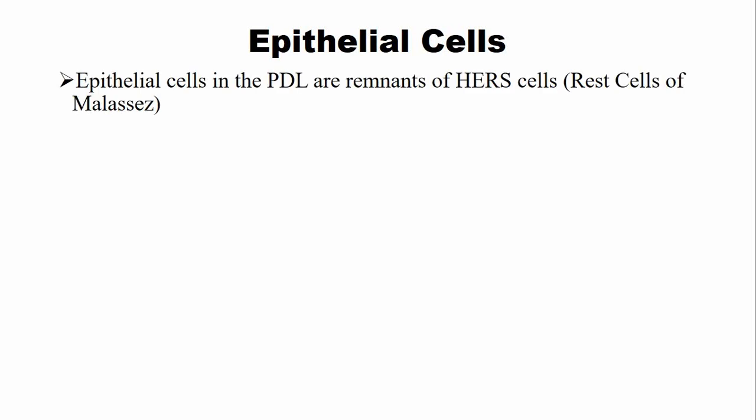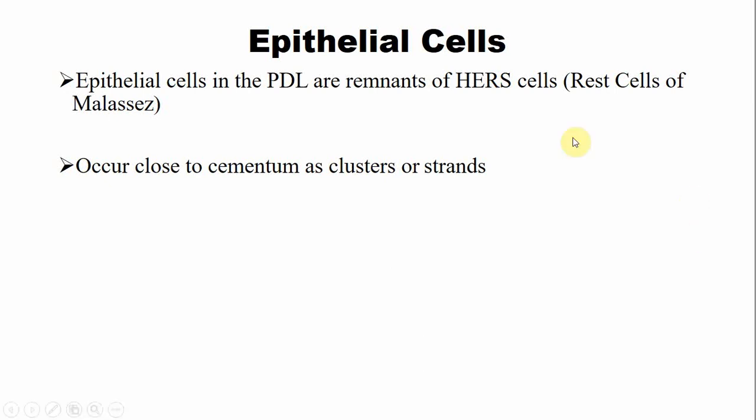There are some epithelial cells present within the PDL. These are remnants of the Hertwig epithelial root sheath cells, which are disintegrated as a result of disintegration of the root sheath during root development. These Hertwig epithelial root sheath cells are present close to the cementum as clusters of strands. They help in periodontal maintenance as they are capable of differentiation into different cell types like cementoblast, fibroblast, and osteoblast.